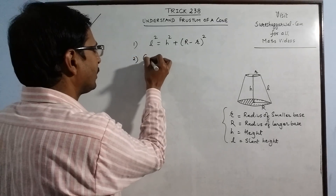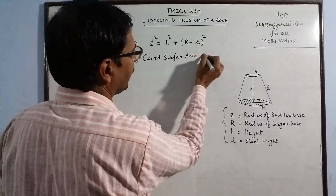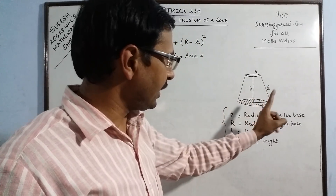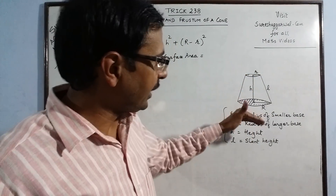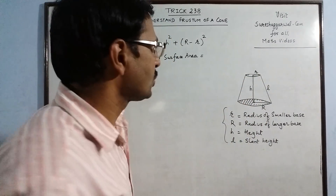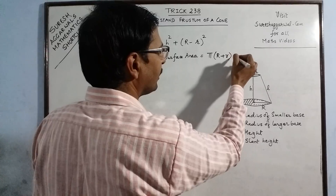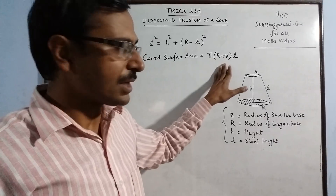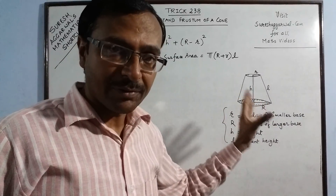Coming to the curved surface area — the curved surface area or lateral surface area of a frustum is the outer area excluding the two bases. If you exclude the two circles on top and at the bottom, whatever is left behind is the curved surface area. The formula is: CSA = π(R + r)L — that is pi multiplied by the sum of the two radii, multiplied by the slant height of the frustum.